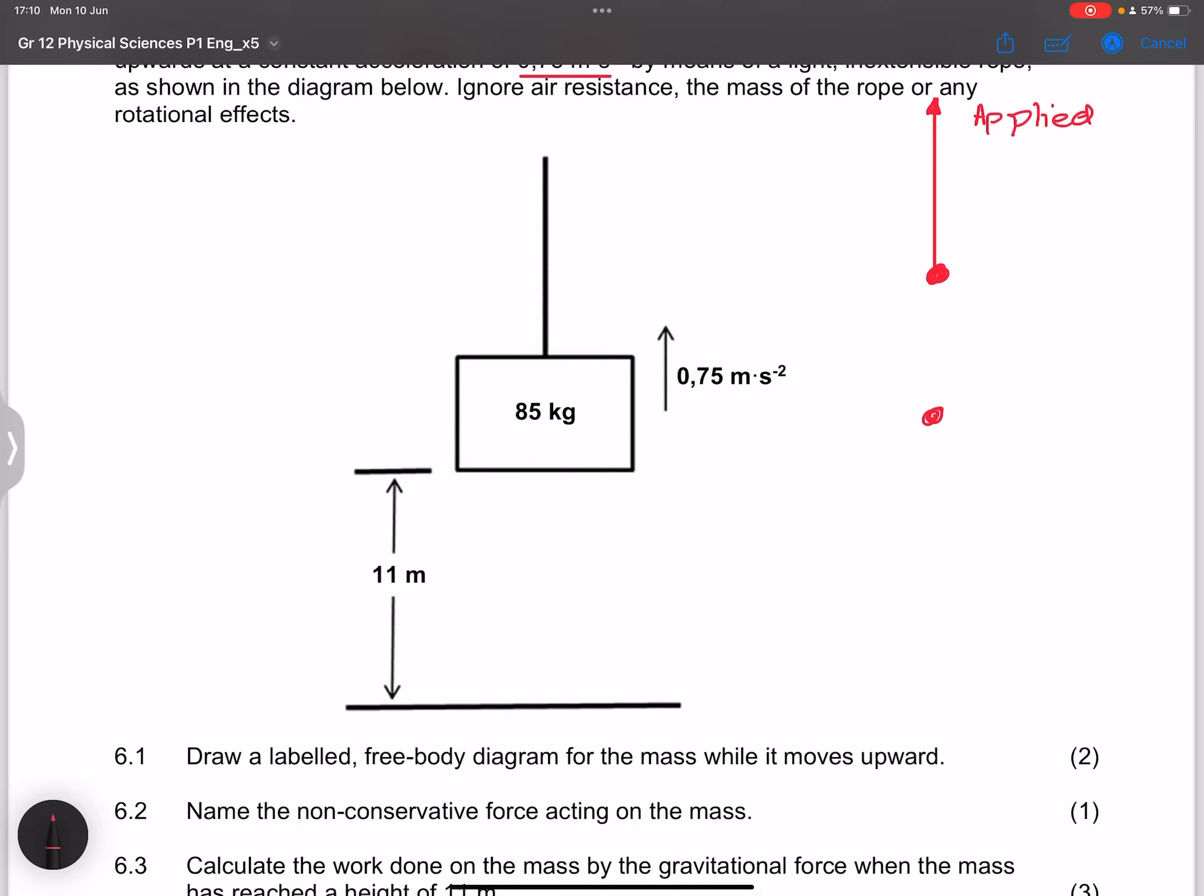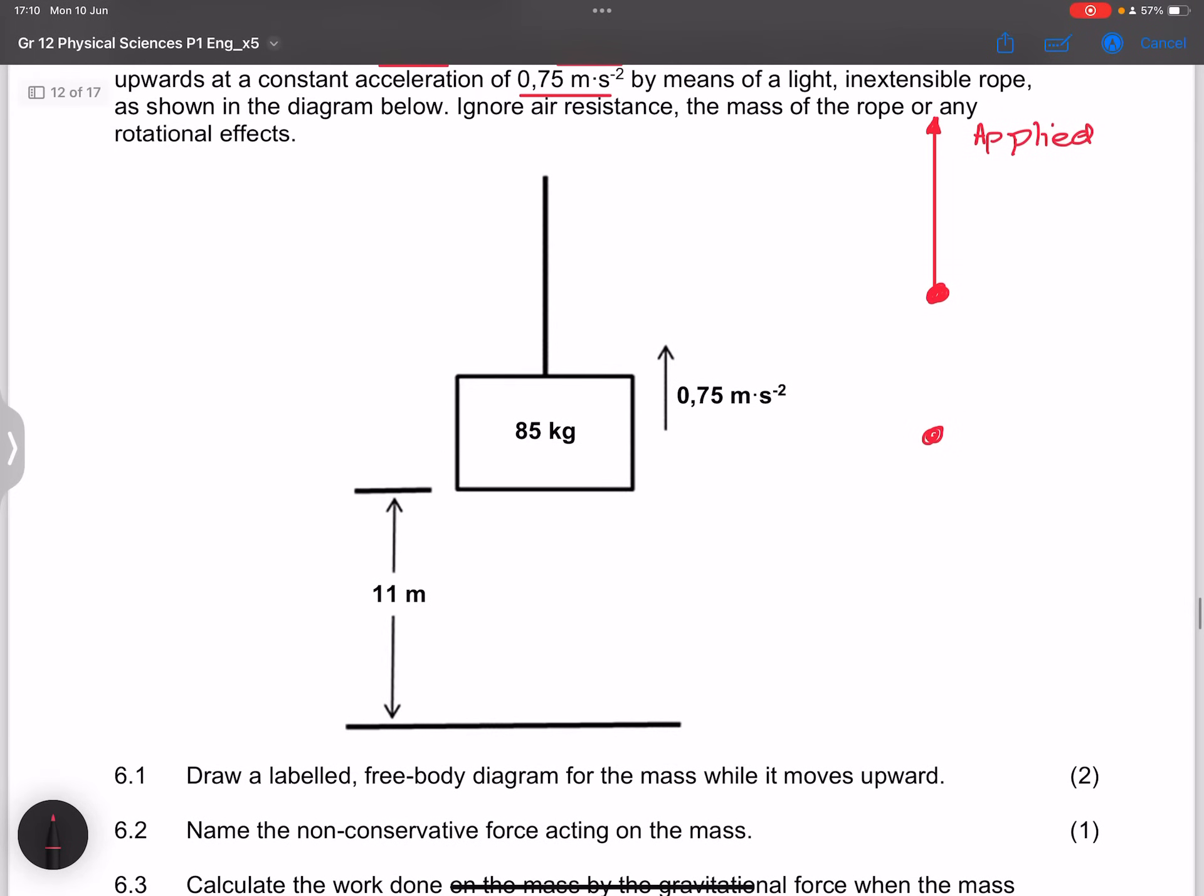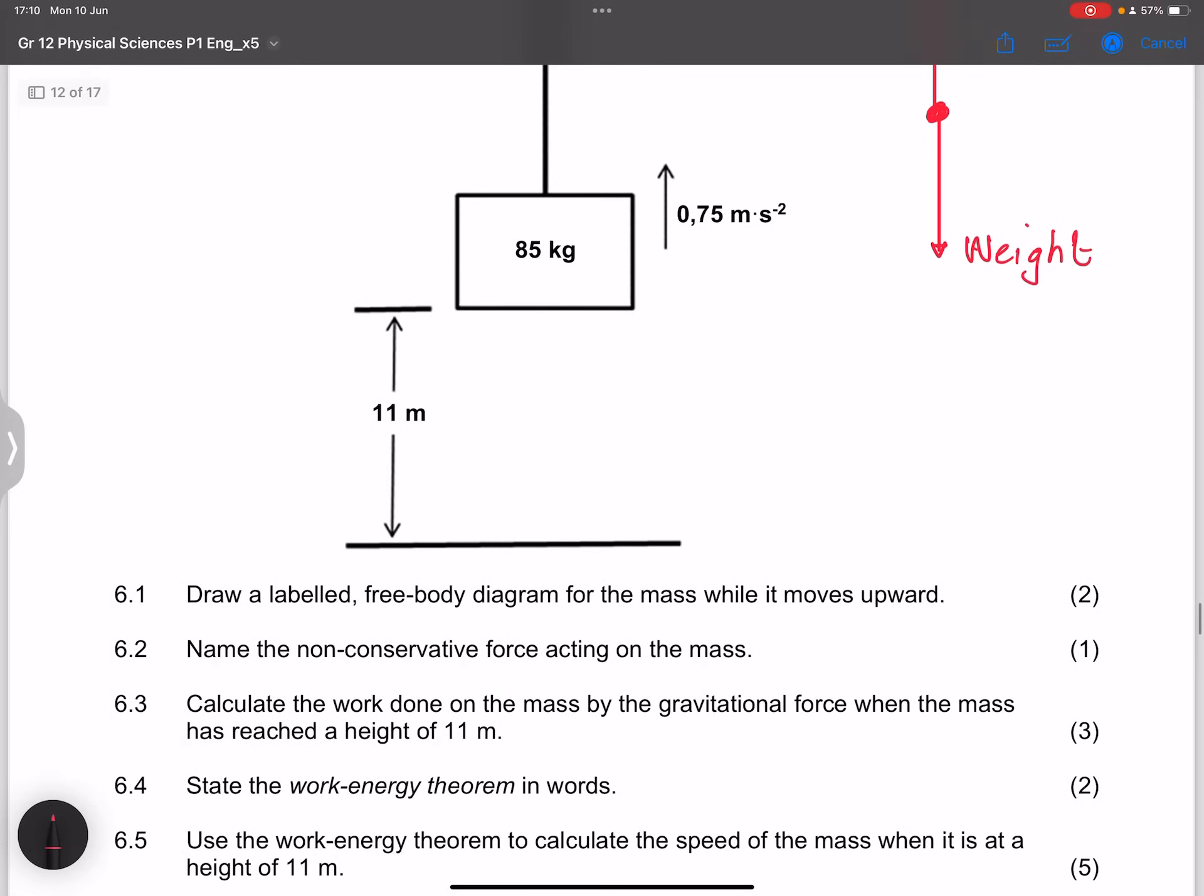Or you can say the force of the rope, and we have the weight or you can say force of gravity. So that's how the free body diagram would look like. As I said to you again, the marks do tell me about the number of forces involved.